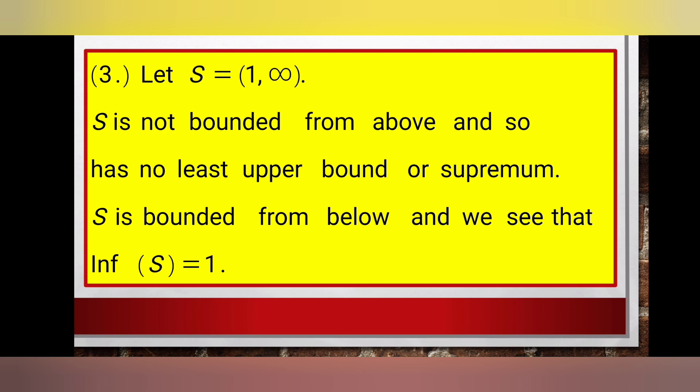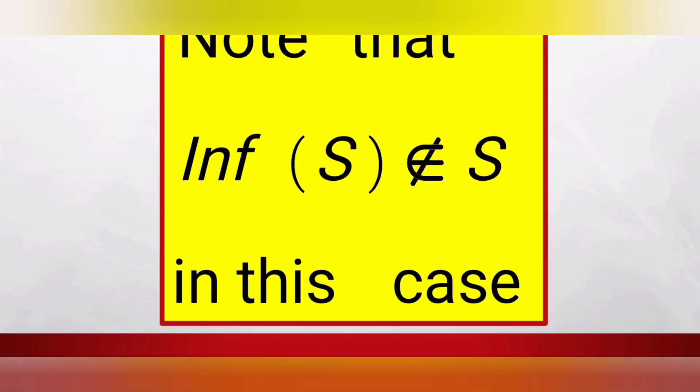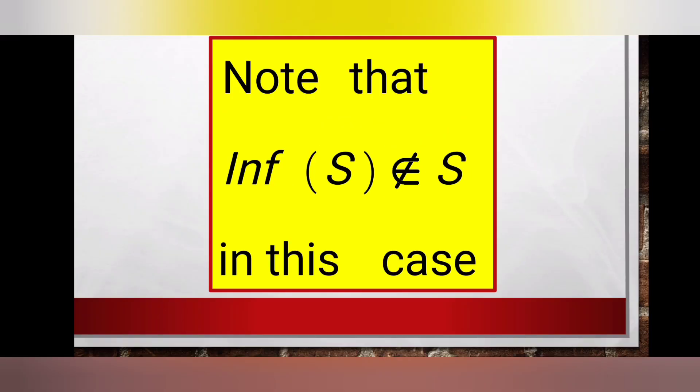Example three: let S be equal to the interval [1, ∞). S is not bounded from above and so has no least upper bound or supremum. But S is bounded from below and the infimum of S is equal to one. We also note that the infimum of S does not belong to S in this case.